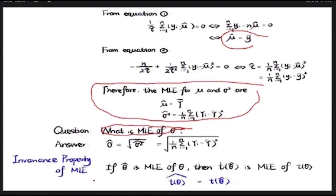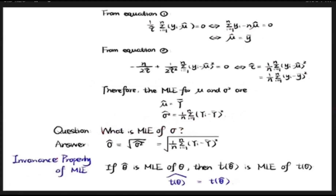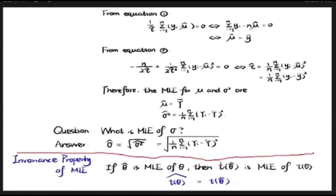Another topic is the invariance property of MLE. If theta-hat is an MLE of theta, then a function of the estimator T(theta-hat) is also an MLE of the function of the parameter T(theta). So the estimator for that function equals T applied to the MLE estimator.